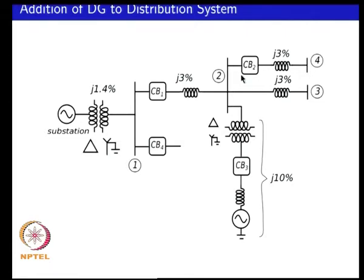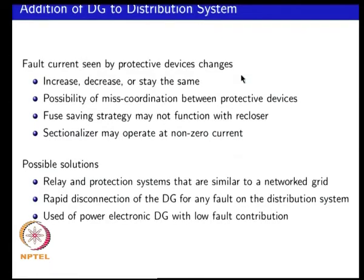You also have the situation where, because of the change in current level, a recloser whose coordination settings might have been done to obtain a fuse saving strategy — because of the change in current levels with the addition of DG — the fuse saving strategy may no longer work. So now there is a direct cost impact on the utility because of the addition of the DG source.